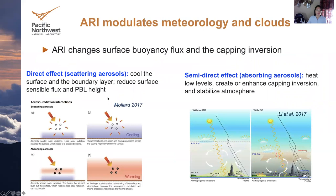Starting with ARI. ARI has the direct effect: for scattering aerosols, it cools the surface and the boundary layer and reduces sensible heat fluxes. For absorbing aerosols, they can heat the lower atmosphere and then create or enhance a capping inversion, stabilizing the atmosphere. This is also called the semi-direct effect.